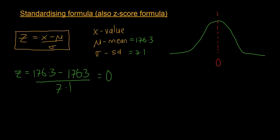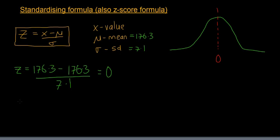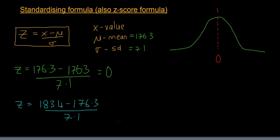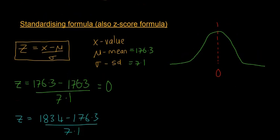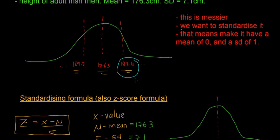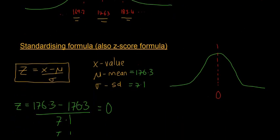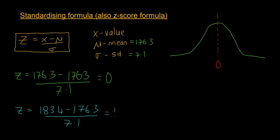Next, in blue: z equals 183.4 minus 176.3 divided by 7.1. This 183.4 is the value at plus one standard deviation. If you put that into your calculator, you get an answer of 1. So plus one standard deviation is now just the value of 1 on the standard normal distribution.